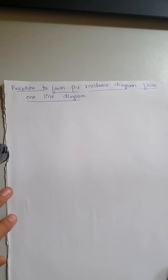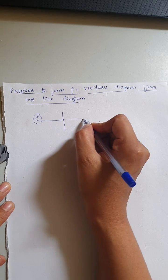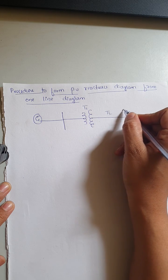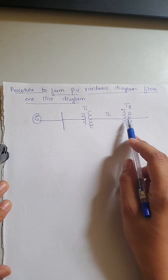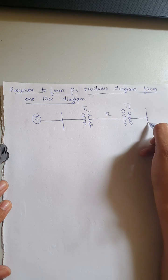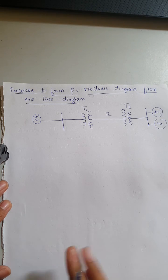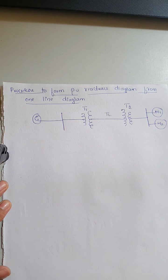Hello everyone. In today's session I am explaining how to draw a reactance or per unit reactance diagram from a one-line diagram. This is very important for solving problems in module one. Before going through the procedure, I'll consider one example as a one-line diagram. Here one generator is connected to a bus bar, which is connected to a step-up transformer T1, and we have a transmission line running between transformer T1 and transformer T2.